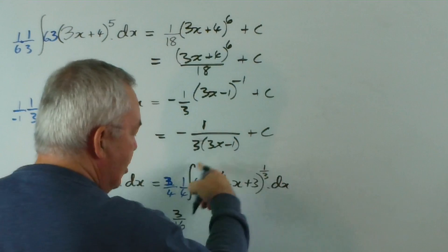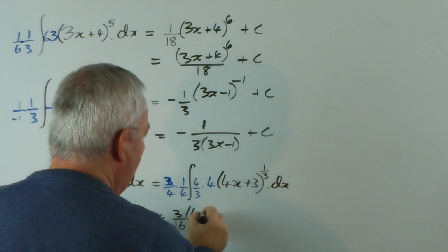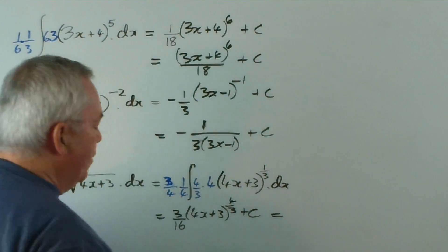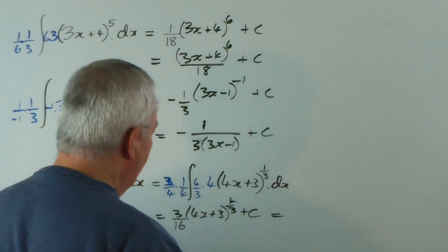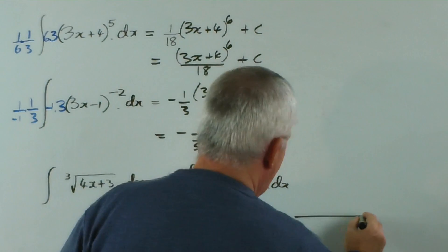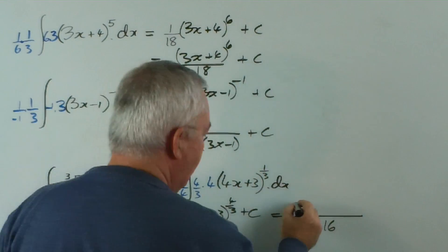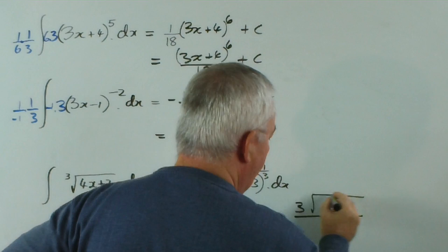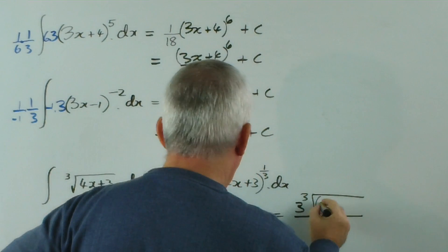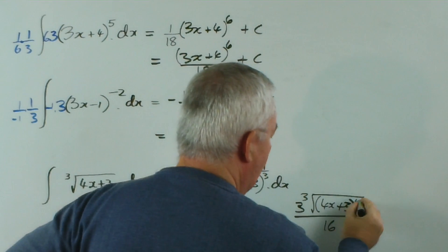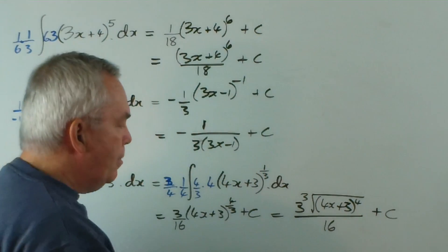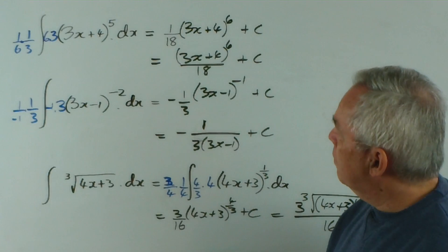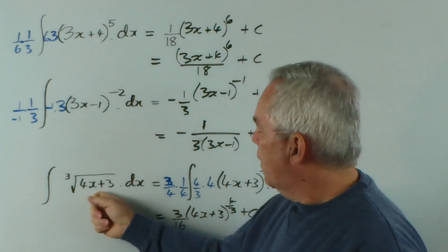If we tidied the second one up, because the negative index puts it on the bottom, it would be 1 over 3 lots of 3x minus 1, plus c. And this third one would be 3 on 16 times 4x plus 3 to the power of 4-thirds plus c, which if we write in radical form would have 16 on the bottom, 3 out the front, and the cube root of 4x plus 3 to the power of 4. So there are three integrals done with functions to a power.